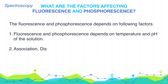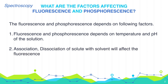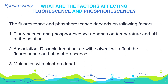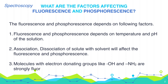Association-dissociation of solute with solvent will also affect fluorescence and phosphorescence. Molecules with electron-donating groups like OH and NH2, where oxygen and nitrogen are electron-rich groups, are strongly fluorescent.